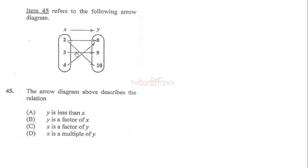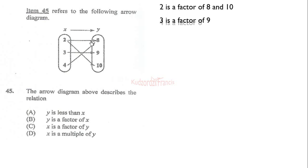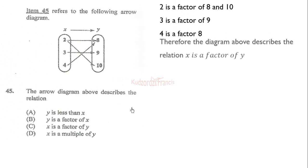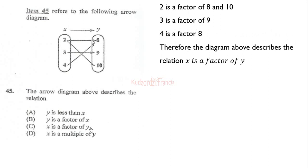For item 45, the arrow diagram shows that 2 is a factor of 8, 2 is a factor of 10, 3 is a factor of 9, and 4 is a factor of 8. The rule described by the arrow diagram is: x is a factor of y.